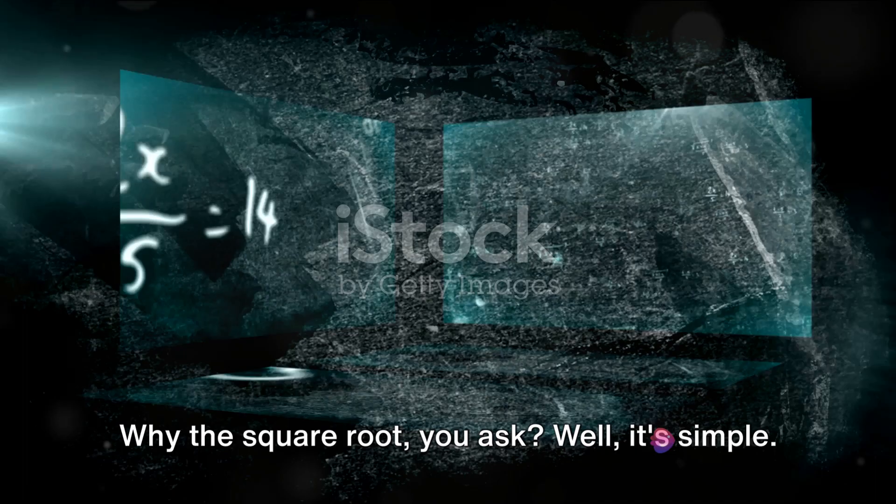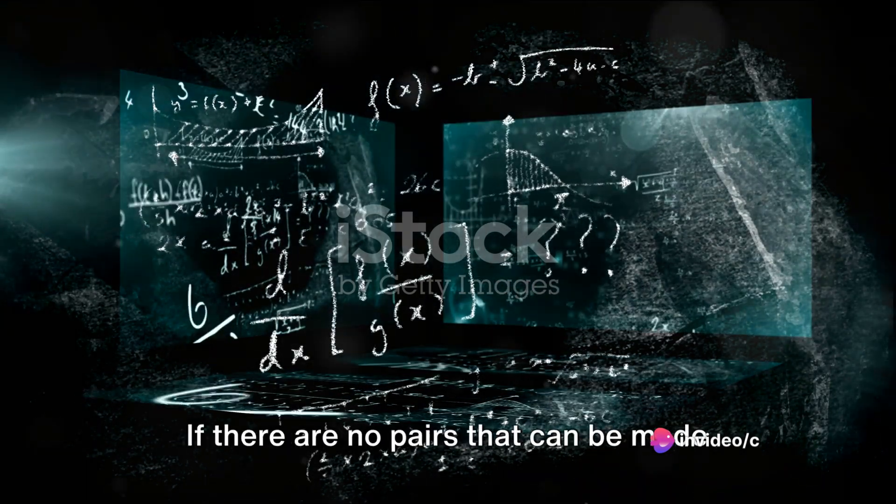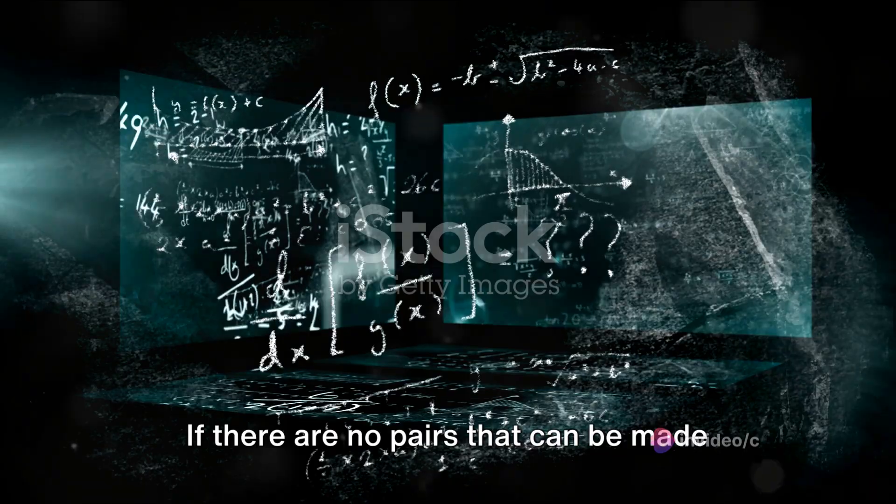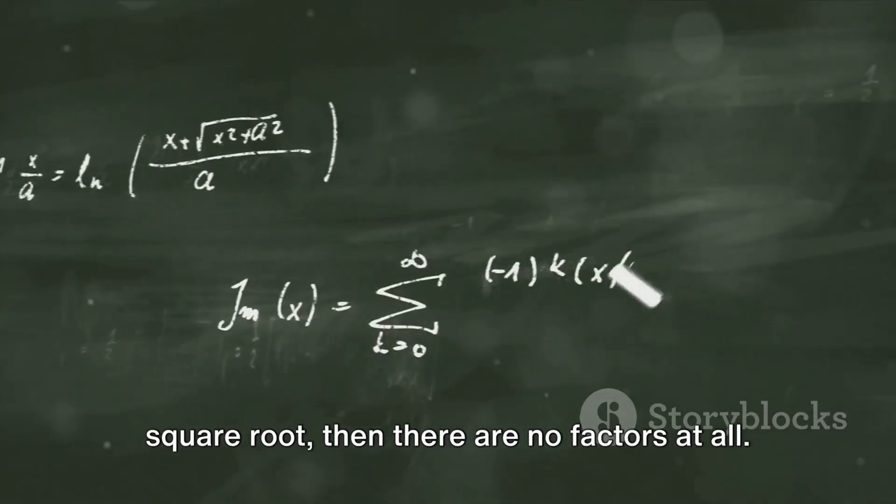Why the square root, you ask? Well, it's simple. Any factors of a number must pair up to make the number itself. If there are no pairs that can be made with numbers less than or equal to the square root, then there are no factors at all.